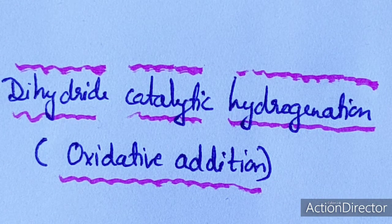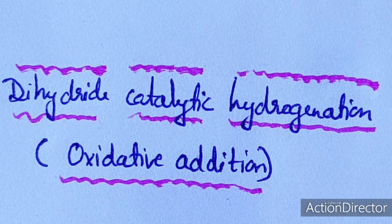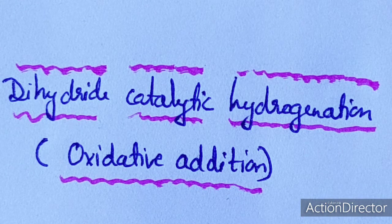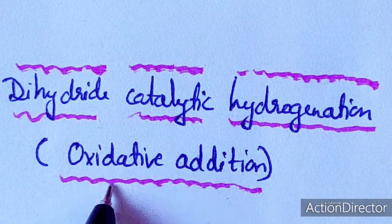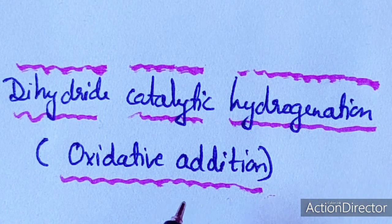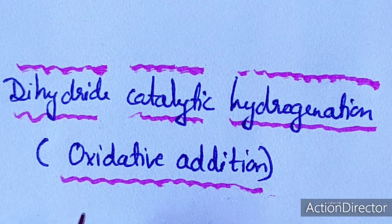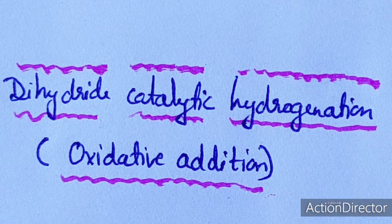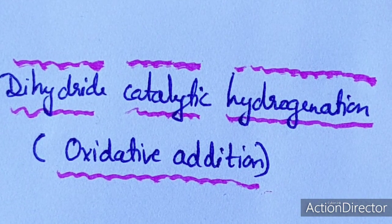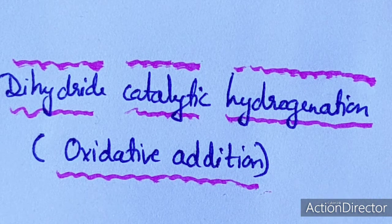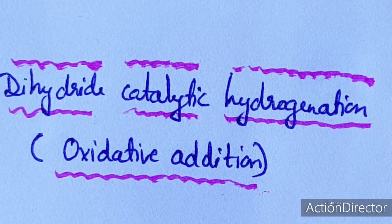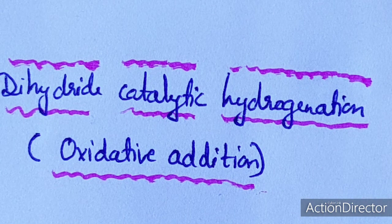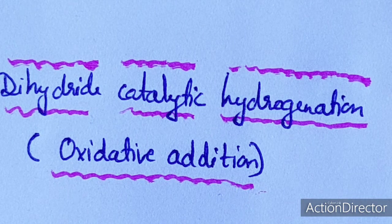In this lecture we will discuss dihydride catalytic hydrogenation, in which the activation of the hydrogen molecule is done by oxidative addition. This lecture covers catalytic hydrogenation of alkenes via oxidative addition. I will discuss three catalysts under this category: the Wilkinson catalyst, the Schrock-Osborn catalyst, and the Crabtree catalyst. We will discuss the mechanisms of the Wilkinson catalyst and the Schrock-Osborn catalyst.